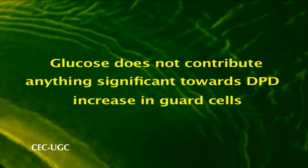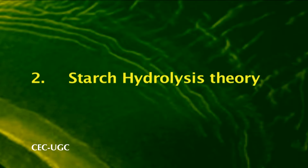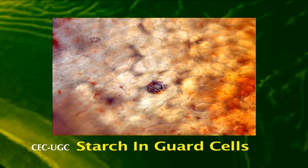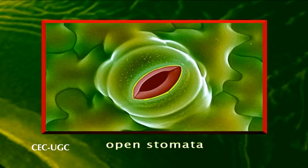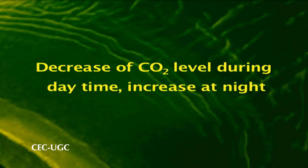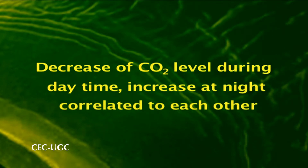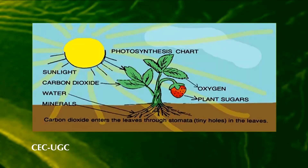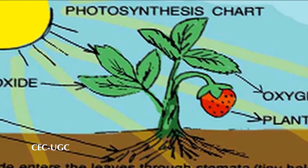Starch hydrolysis theory: Sayre in 1926 and Scarth in 1932 proposed theories that, though different from one another, show some similarities. Observations such as the presence of starch in guard cells at night and its disappearance during daytime, opening of stomata under high pH conditions and closing at low pH, and decrease of CO₂ level during daytime and increase at night are well correlated. During the daytime, green plants start synthesizing glucose by fixing carbon dioxide, thus the concentration of carbon dioxide decreases within and outside the leaves.